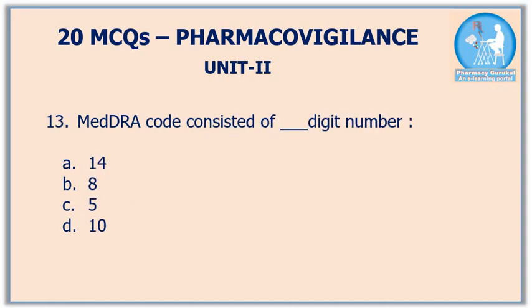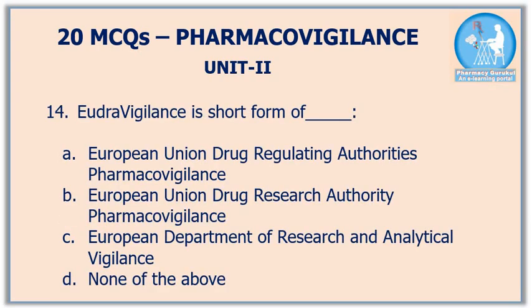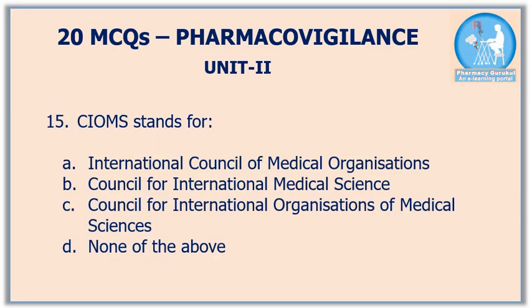Twelfth question: MedDRA is developed by — the correct answer is option C, ICH. Thirteenth question: MedDRA code consists of how many digits — the correct answer is option B, an 8-digit number.